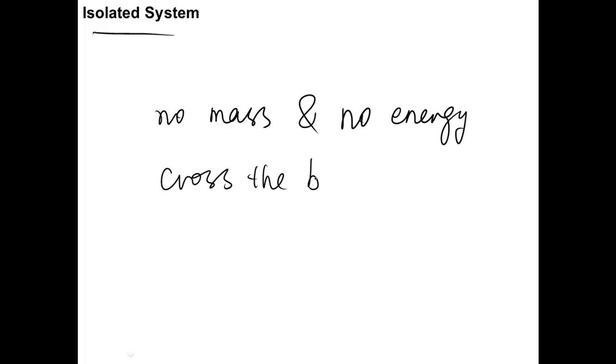Next, if neither mass nor energy crosses the boundary, we define this system as an isolated system. No mass and no energy crosses the boundary.